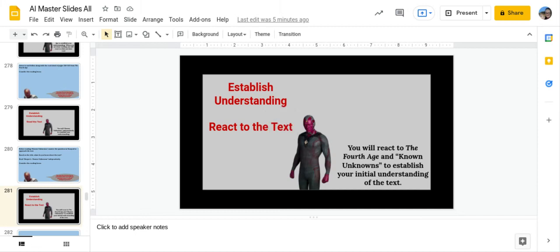Now you will react to both The Fourth Age and Known Unknowns to establish your initial understanding of the text. I want you to answer the first two questions in your reading response journal based on the reading from The Fourth Age. Based on this text, what are some potential benefits and challenges that the future of artificial intelligence presents?